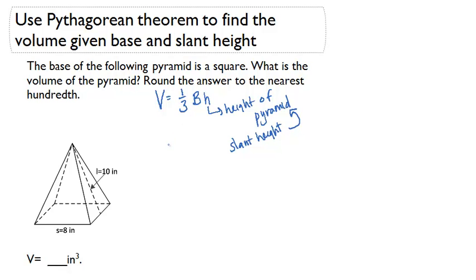So first off, let's start by reading the problem. The base of the following pyramid is a square. What is the volume of the pyramid? Round the answer to the nearest hundredth. So let's take a look at the information we have. We know the side of the base of the pyramid is 8, which means the base area is 64 inches squared. I got that just by multiplying 8 times 8. Then I know that the slant height is 10 inches.